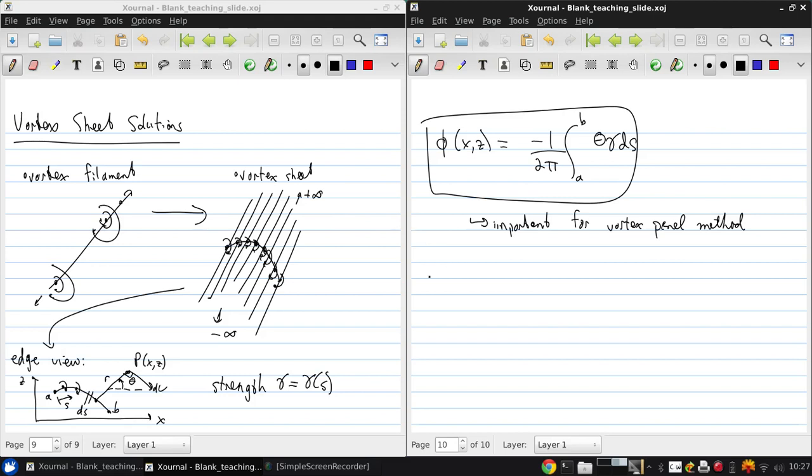And then of course the circulation of the total airfoil is just the integral of the sheet strength. Across the sheet, the local strength gives the jump in tangential velocity.